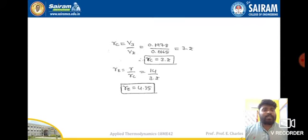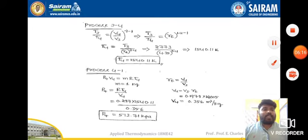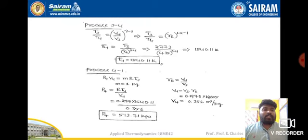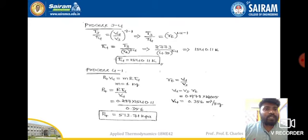The expansion ratio re = r/rc = 14/3.2 = 4.35. For process 3 to 4, the formula is: t3/t4 = (v4/v3)^(γ−1). Wherever v4/v3 appears, we substitute the expansion ratio. This gives us t4 = 1540.11 Kelvin.